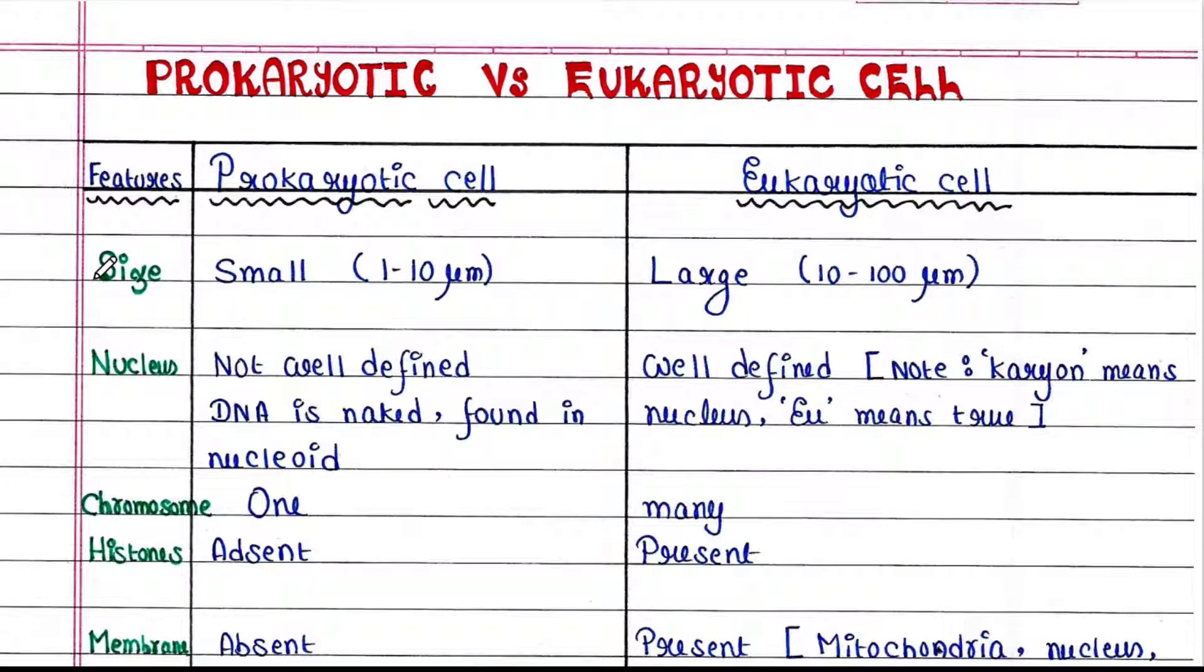If we talk about the size of the cell, prokaryotic cells are very small—they are only 1 to 10 micrometers in size. Whereas eukaryotic cells are large, they have 10 to 100 micrometers in size.